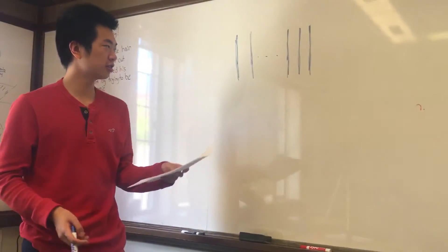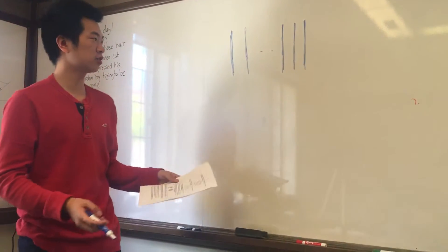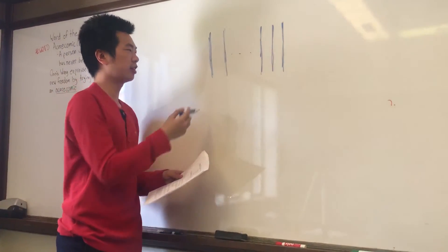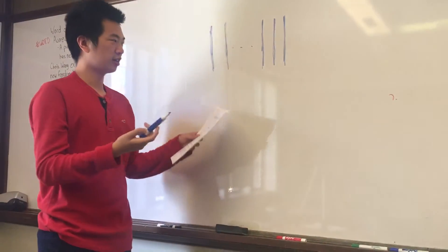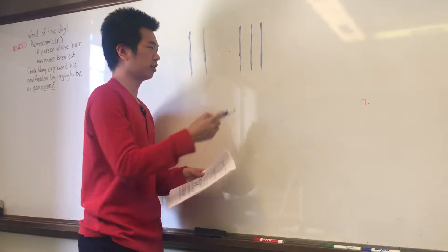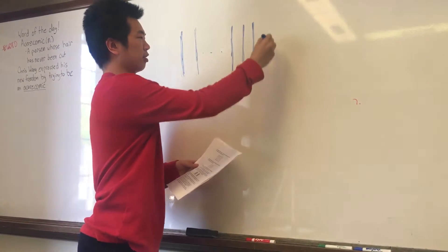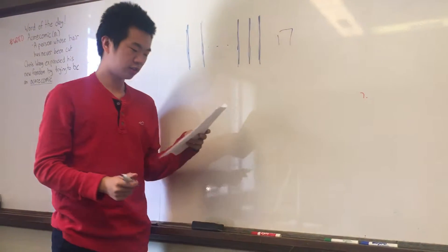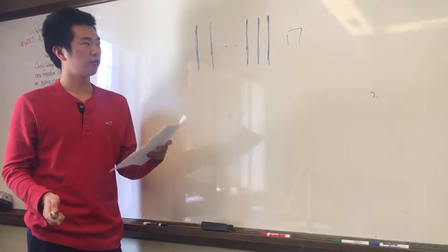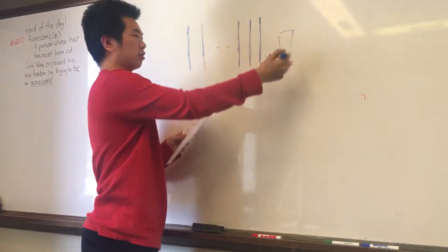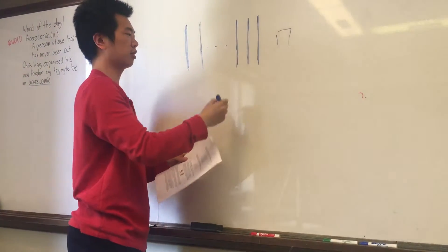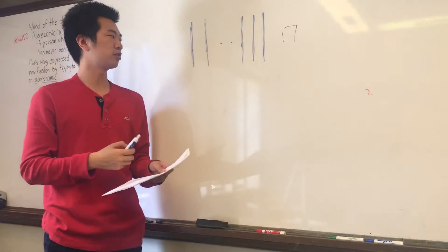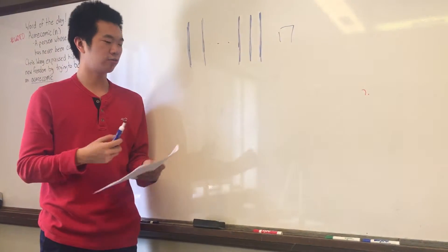In this question, there's an alternating pattern between black and white, and the end of it is black, and you have 17 of them. So if you take the last one out, you only have 16 of them, but you have an equal amount of black and white strips.